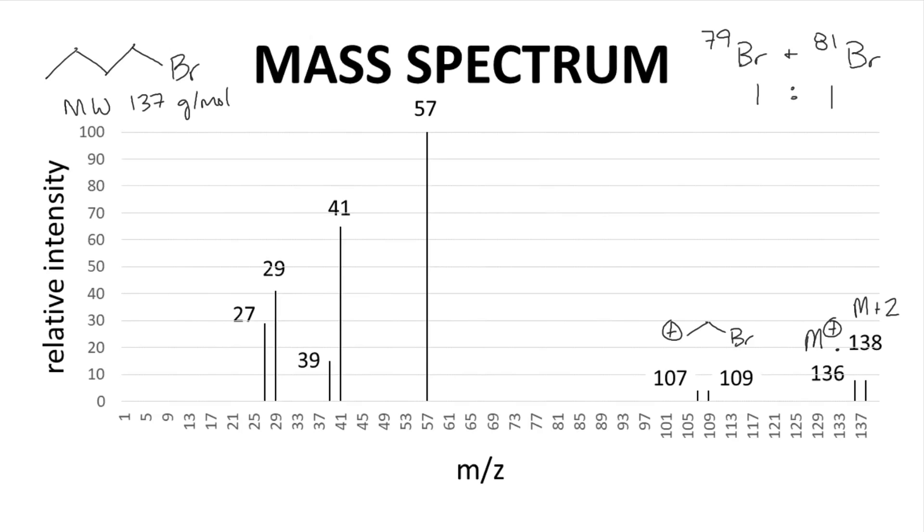The m/z 57 peak corresponds to a butyl cation. We can explain this through a charge site initiated mechanism through loss of a bromine atom.